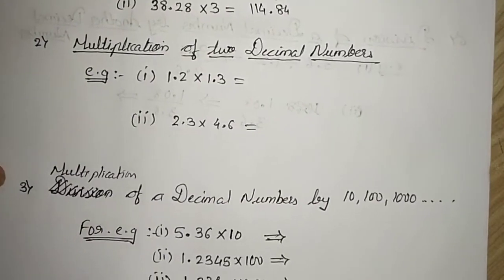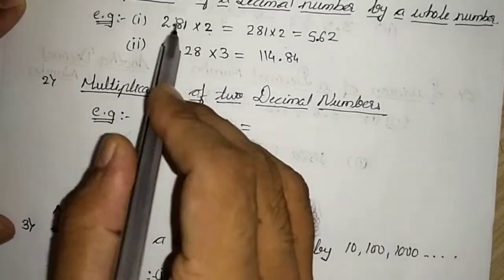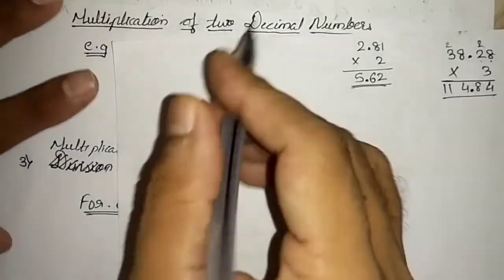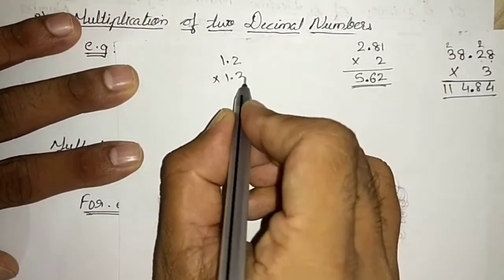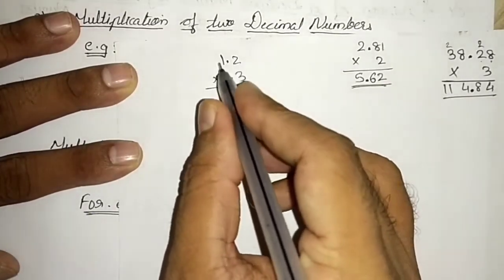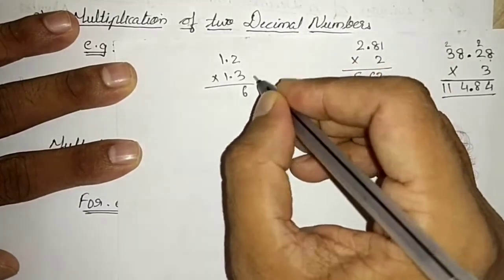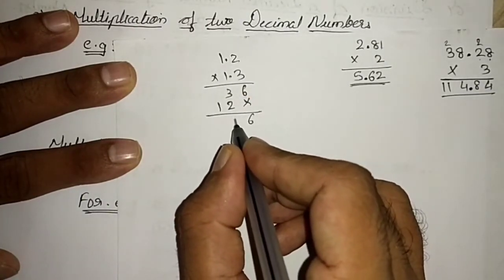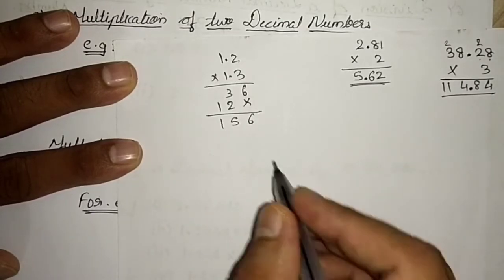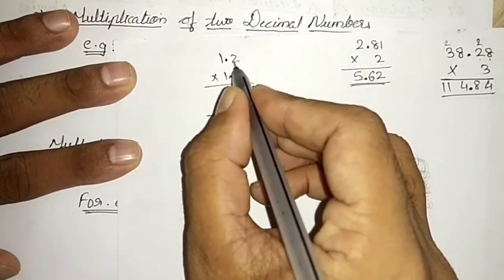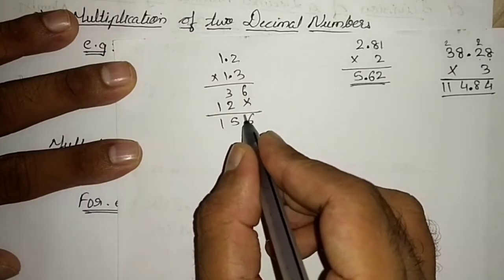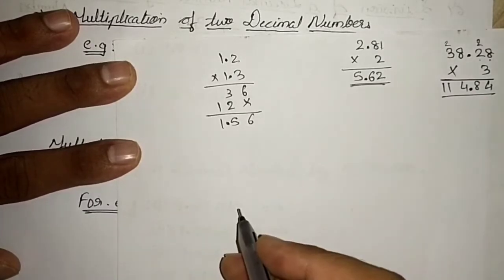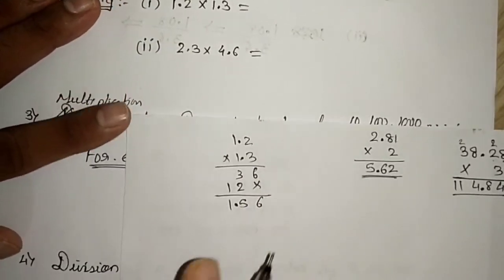Now let us move to multiplication of two decimal numbers. The same procedure applies. Let us take 1.2 × 1.3. Ignore the decimal points and multiply as if you are multiplying 12 × 13. You get 156. Now how many decimal places were removed? One from each number, so 1 + 1 = 2 total places. Count 2 places from right to left and place the decimal point. The answer is 1.56.